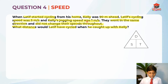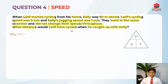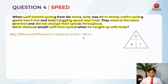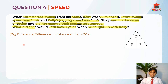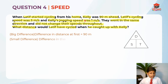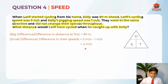First step: we need to know the big difference and the small difference. The big difference is the distance between them at the start — Latif was 90m behind Kelly, so the difference is 90m. The small difference is the difference in their speeds: 5m per second minus 1m per second, which gives us 4m per second.